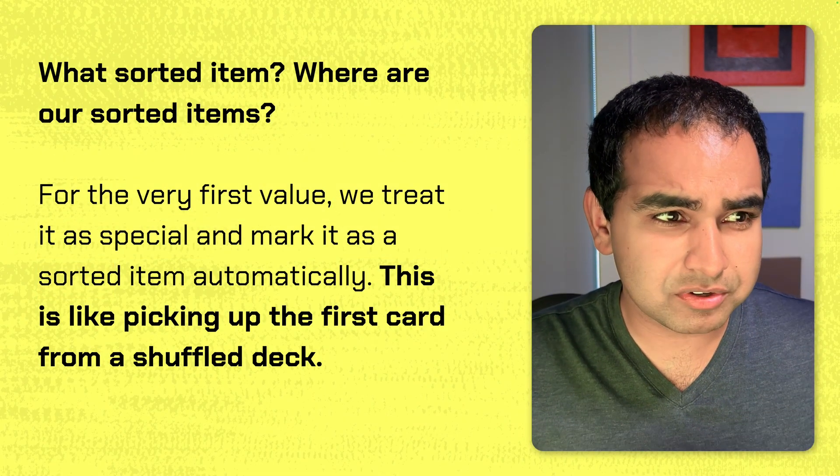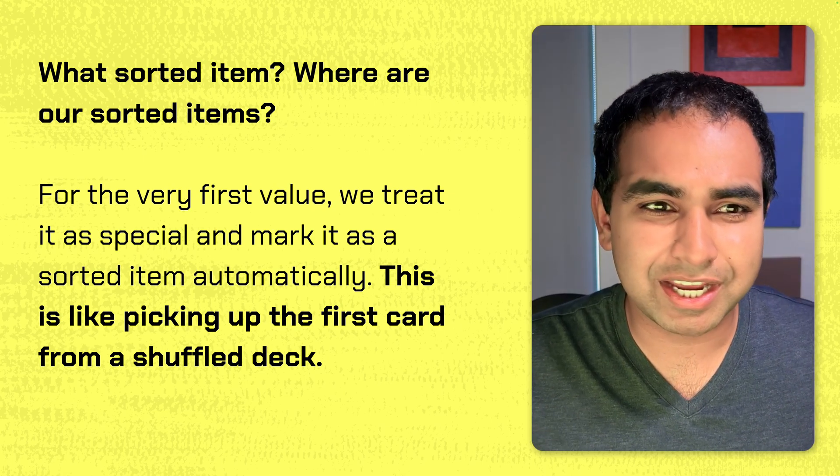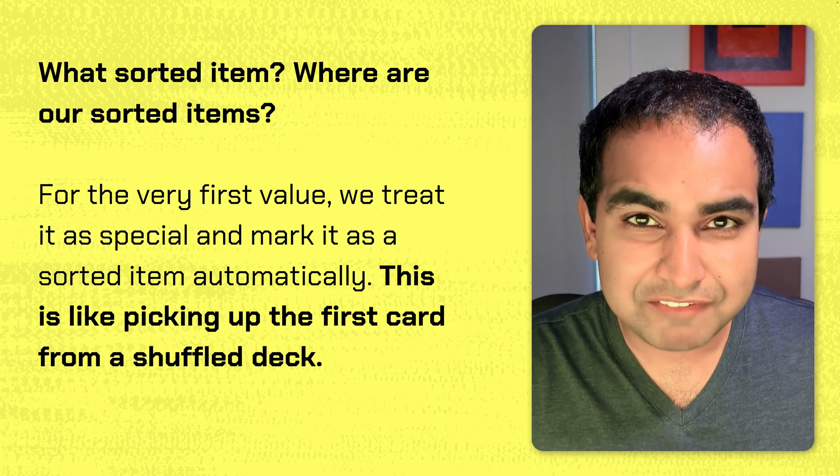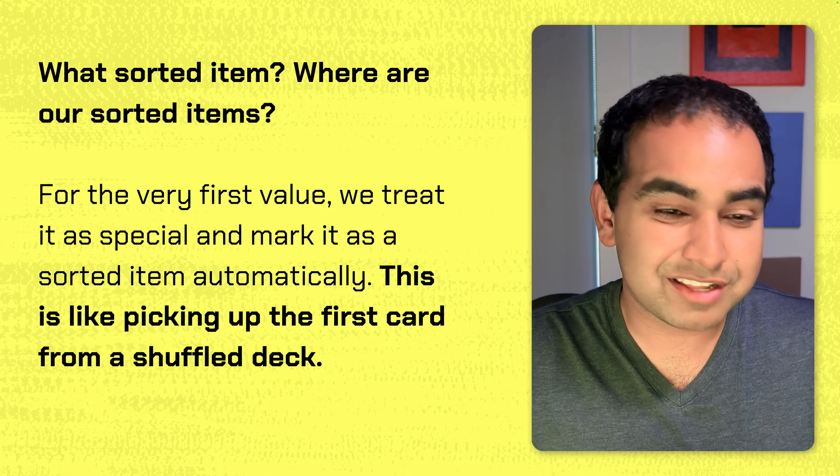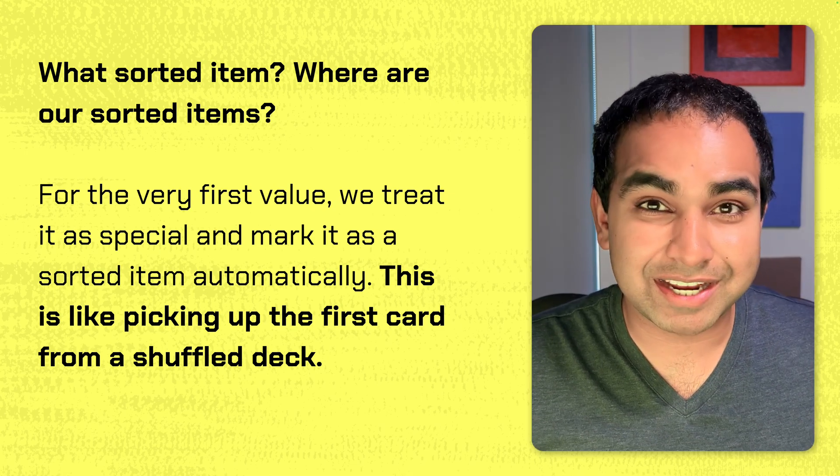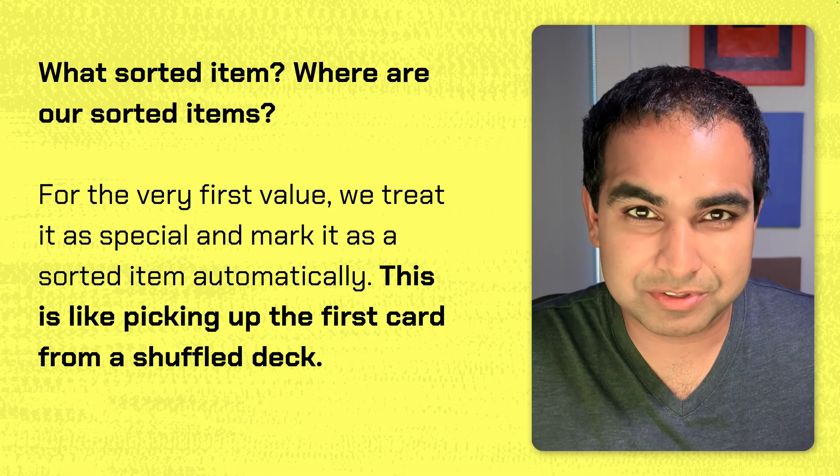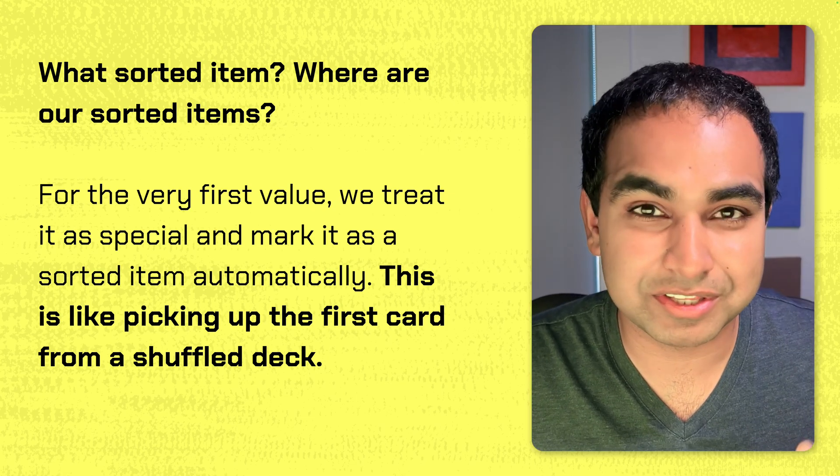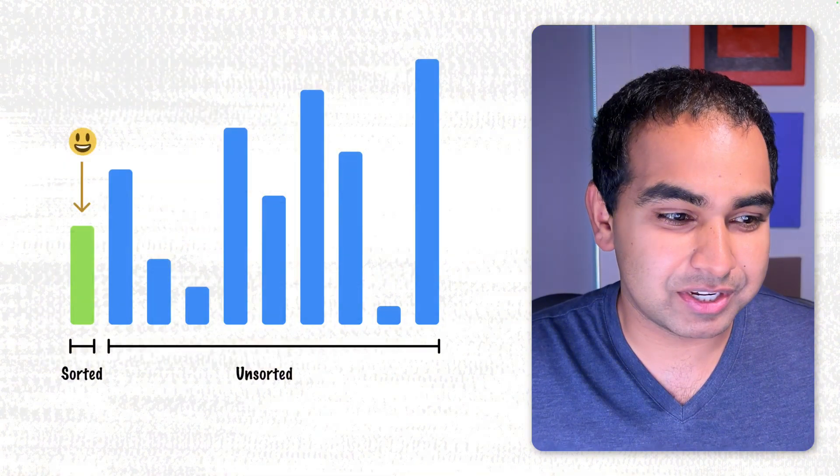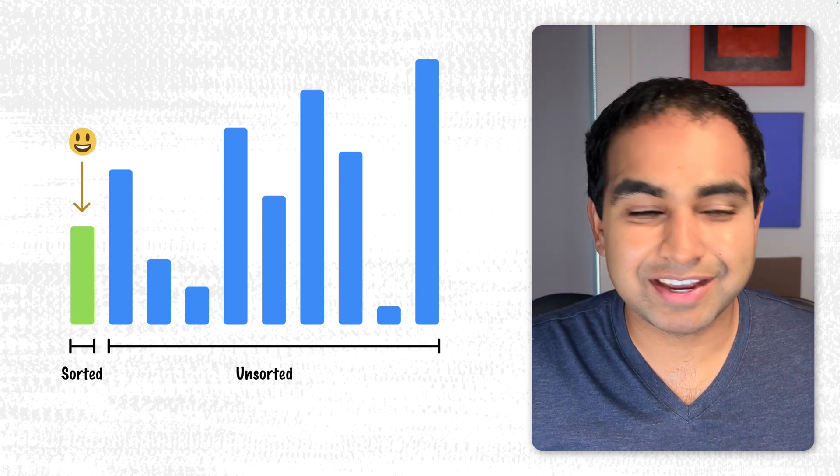Now at this moment you're going to be like, wait, what's a sorted item? Where are our sorted items? For the very first value, we treat it as special and mark it as a sorted item automatically. It's just like picking up the first card from a shuffle deck. It's the first card, it's already in the right location, so it's already sorted. So we're going to go ahead and mark this item as sorted.